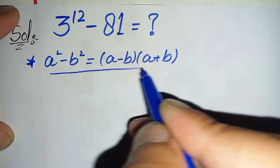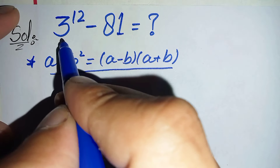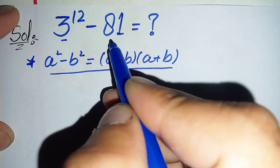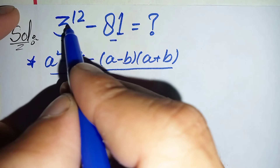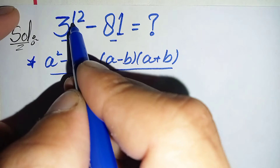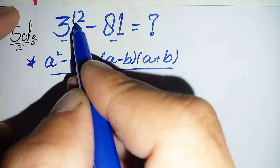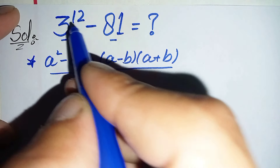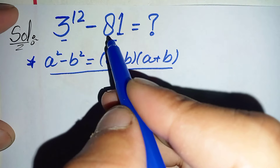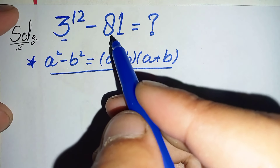To make this identity we need to factorize this number and also this number. So here we will factorize the power 12 as 6 times 2, and we will change 81 to its exponential form: 9 squared, which equals 3 raised to power 2, squared.